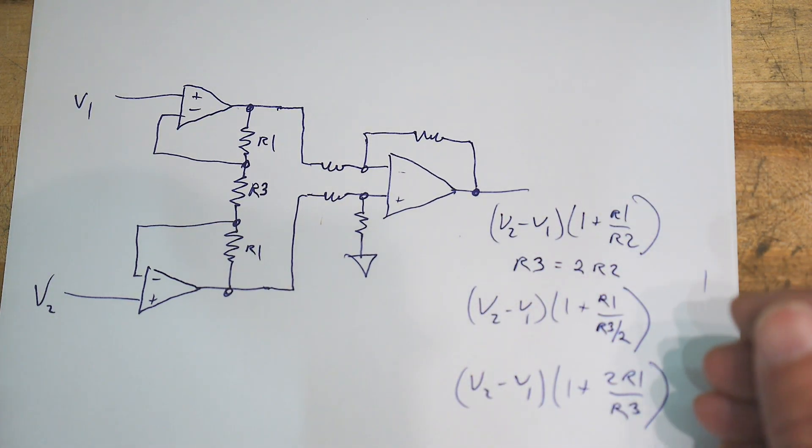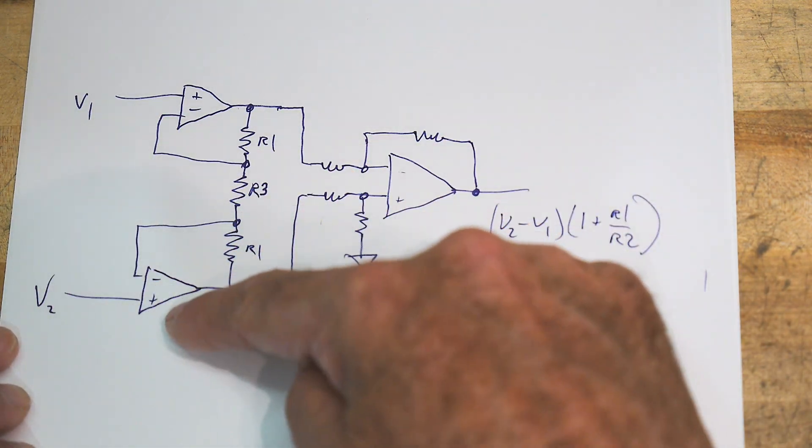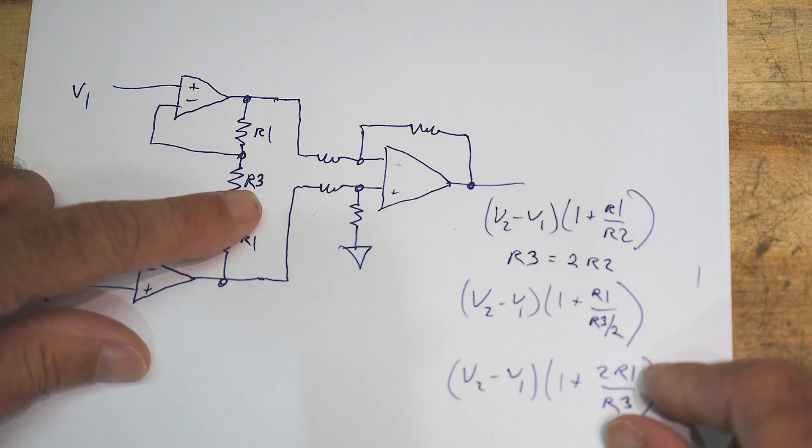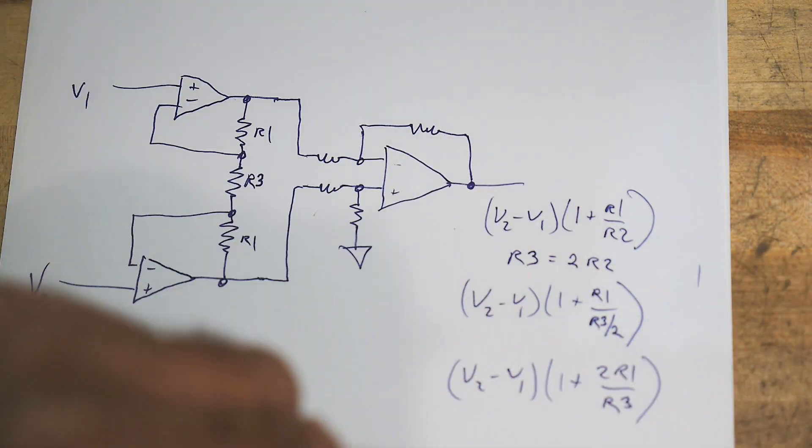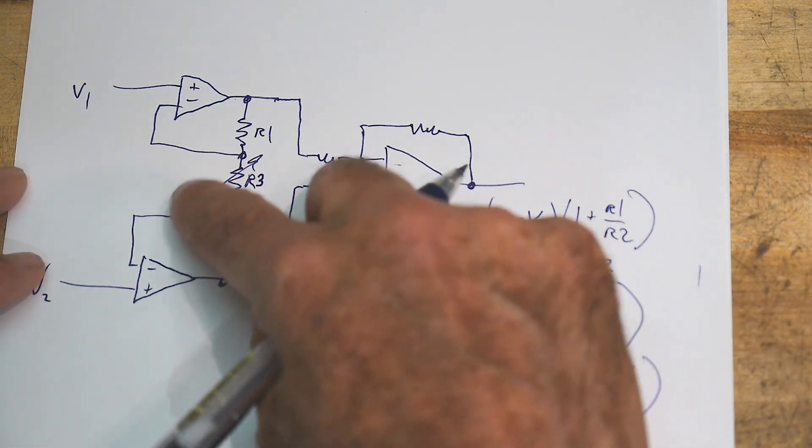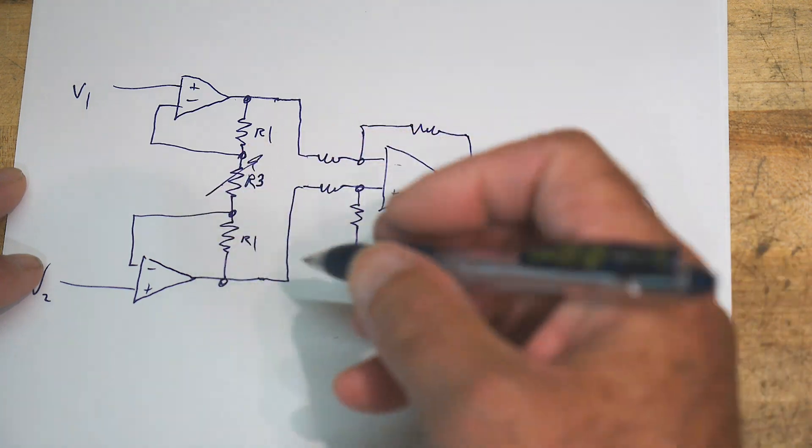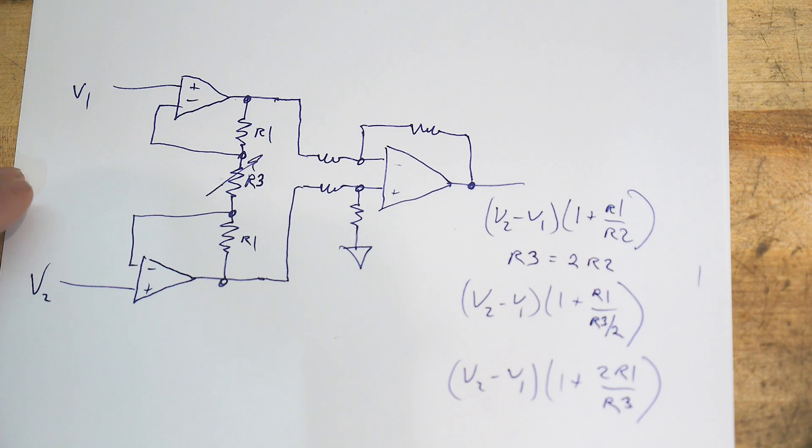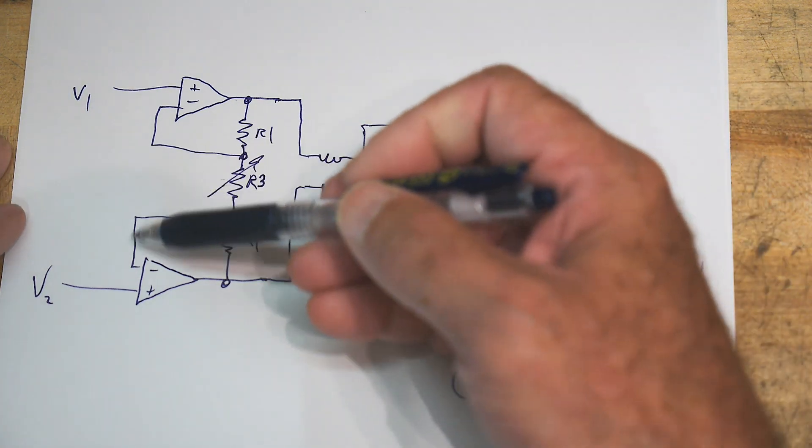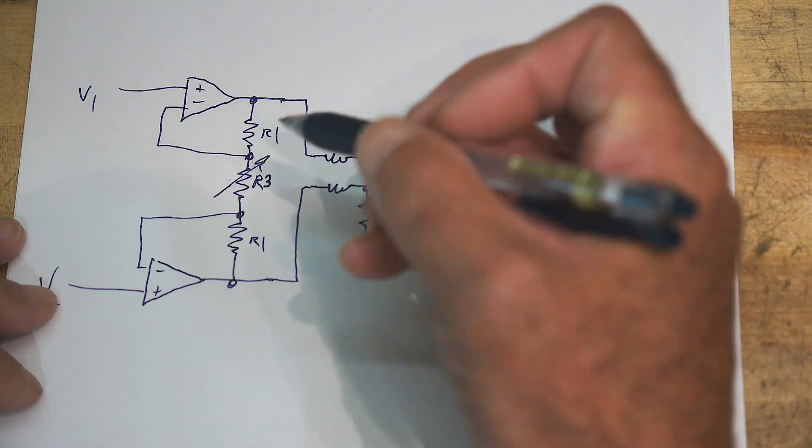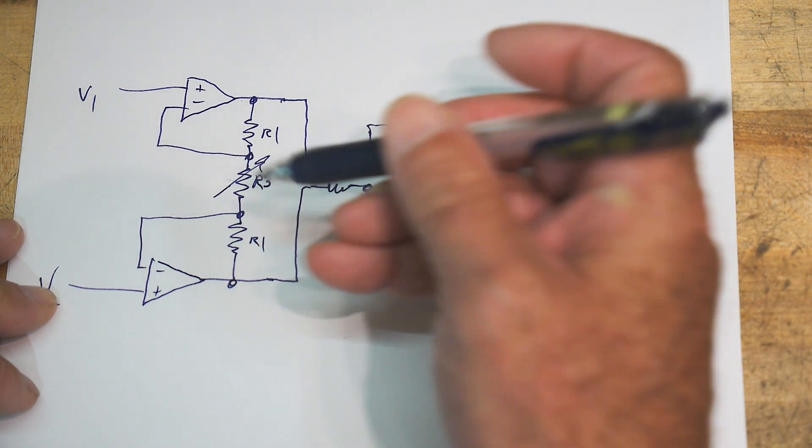This is an instrumentation amplifier. It has a couple good things going for it. One is that it's very high input impedance, and the next thing is you only have to change one resistor in order to change the gain. You could make this a variable resistor and you could set the gain without having to change two resistors together. That makes it very easy to put in things like gain control on a microphone preamp - you just have to vary this one resistor.